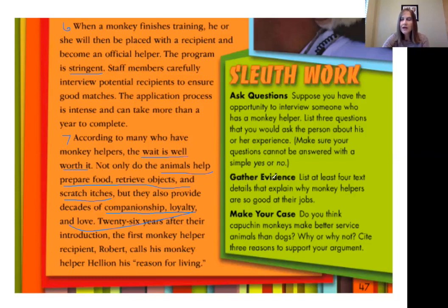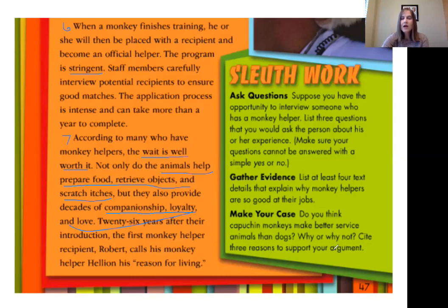Another option is gathering evidence: list at least four text details that explain why monkey helpers are so good at their jobs. We've read several paragraphs about how monkeys can be very helpful to people facing challenges, so look for four specific details about what these monkeys do. Finally, there's the make your case option — the opinion piece: do you think capuchin monkeys make better service animals than dogs? State your opinion and cite three reasons to support your argument. For all of these activities you can write them down, talk about them with someone who watched the video with you, or think about them on your own.